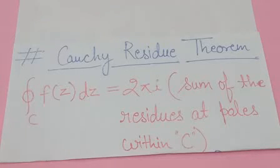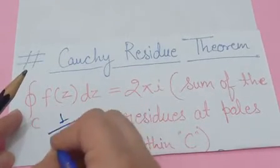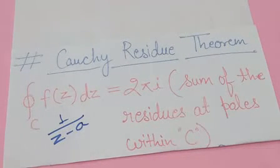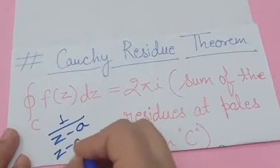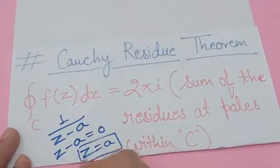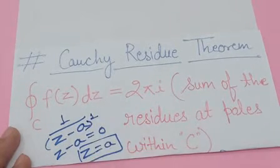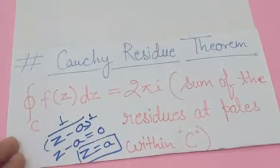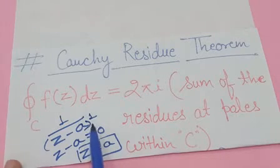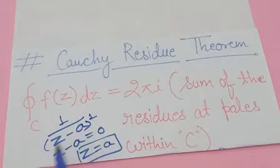Let's discuss how to find a pole. Consider a simple function: 1 upon (z − a). The denominator is (z − a). Set the denominator equal to zero: z − a = 0, so z = a. This is a pole. It is a simple pole because the power of (z − a) is one. If the power is two, it becomes a pole of order two; if three, pole of order three.